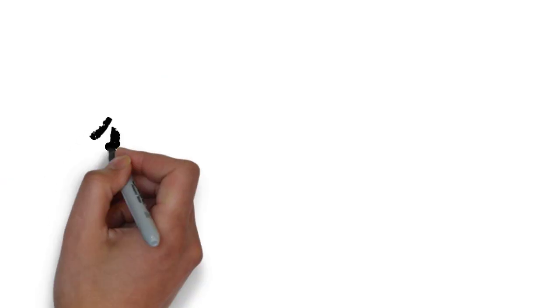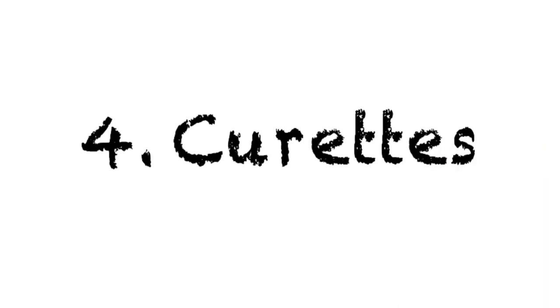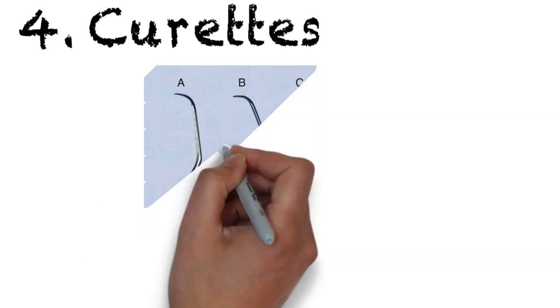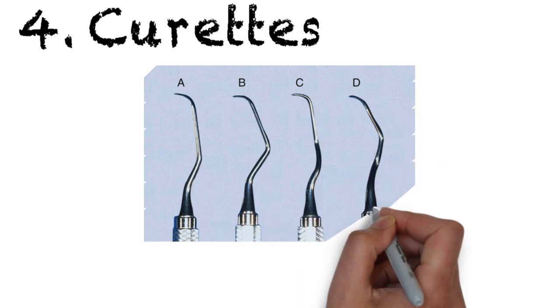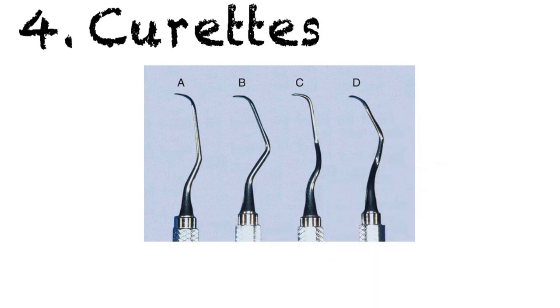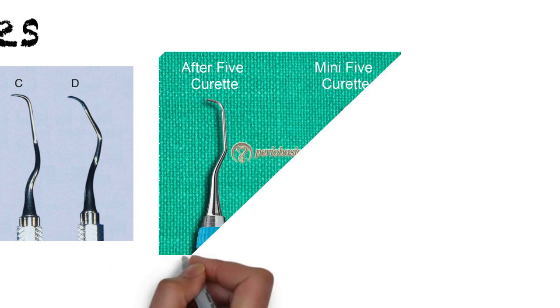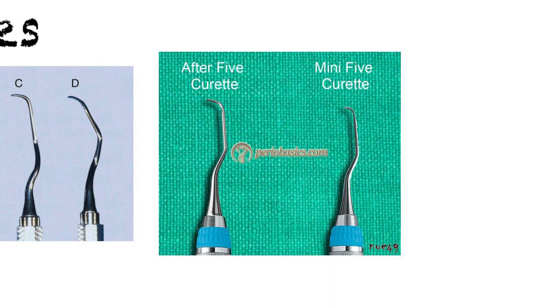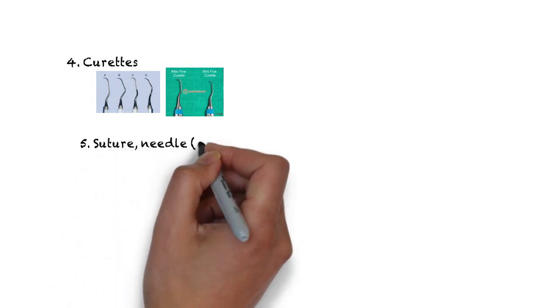Next we require curets that form a very crucial part of flap surgeries and help in debriding. We have Gracey and area-specific curets specifically numbered for facial, mesial, distal, anterior, and posterior areas. We also have the universal curets such as the 4R, 4L for posteriors, and 2R, 2L for anteriors. Modifications of Gracey curets such as the extended 5 with a long shank, the mini 5 with a short blade, etc., are available to further enhance the instrumentation in deep and narrow sites.